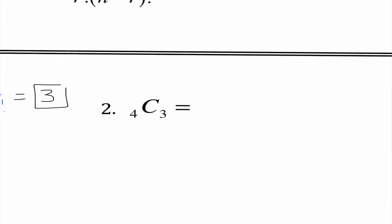4C3 that would be 4 factorial over 4 minus 3 factorial 3 factorial. So I have 4 factorial over 1 factorial 3 factorial. And this reduces to be 4. So this is saying if I had four letters and I was choosing three of them there would be four different ways to go about doing that.